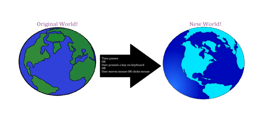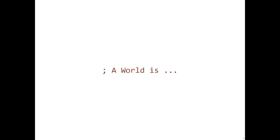Hey everybody, I'm here to introduce how to define a world for your Big Bang program. Defining a world definition is the first step in designing a Big Bang program. By defining a world definition, we automatically know the signatures of the Big Bang functions we will have to implement. A comment like 'a world is' with the description of the world will be at the beginning of your Big Bang program. Deciding what a world definition should be isn't always easy, but hopefully seeing a few examples of different Big Bang programs will help.